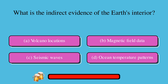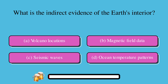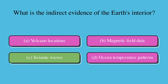What is the indirect evidence of the Earth's interior? A. Volcano locations, or B. Magnetic field data, or C. Seismic waves, or D. Ocean temperature patterns? The correct answer is C. Seismic waves.